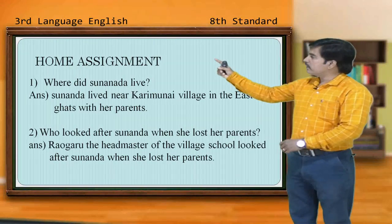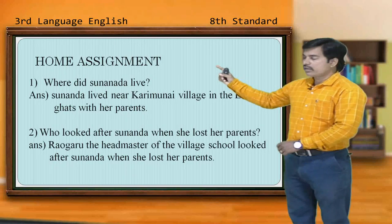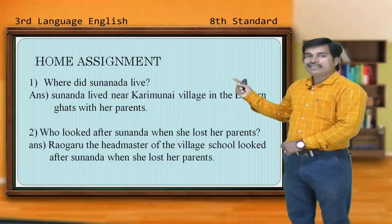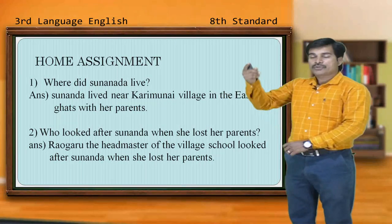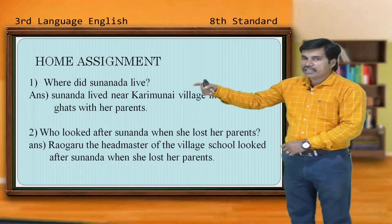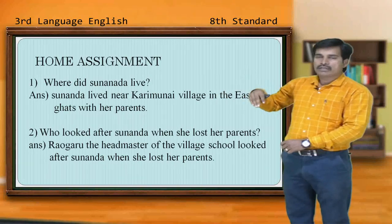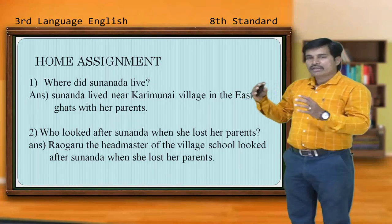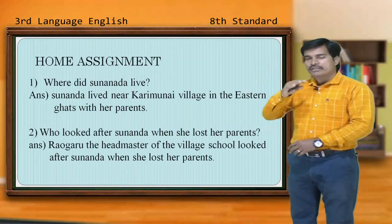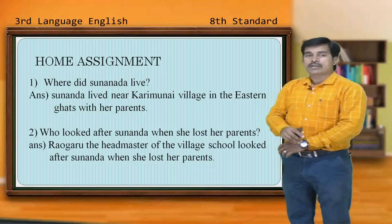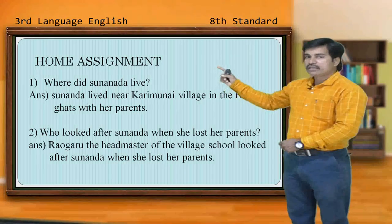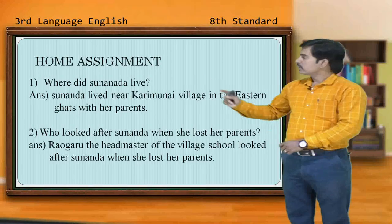If you see the first question: Where did Sunanda live? The answer is: Sunanda lived near Karimunai village in the eastern Ghats with her parents. Just recall the session — in our previous session we discussed that a family used to live in Karimunai village, her father was a landlord, they were a happy family, and all of a sudden there was a big explosion. So, Sunanda lived near Karimunai village in the eastern Ghats with her parents.